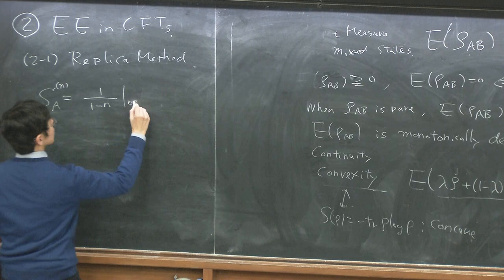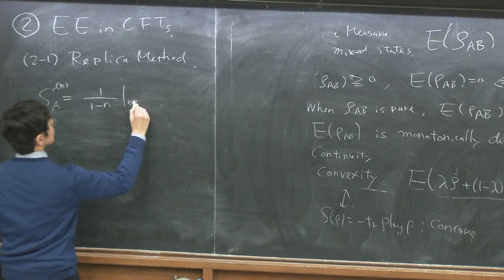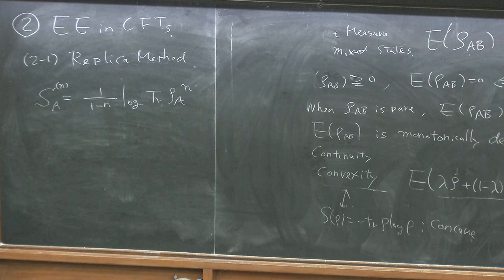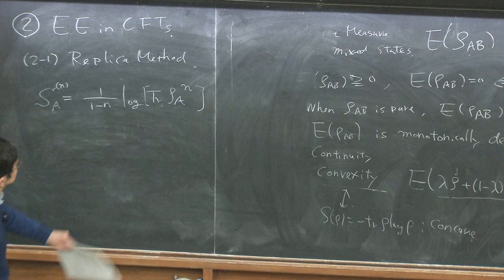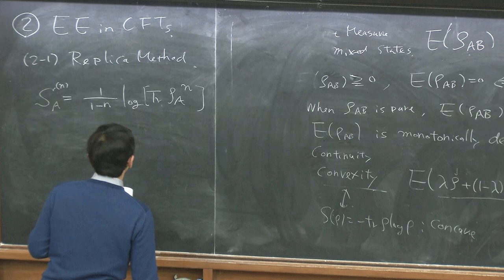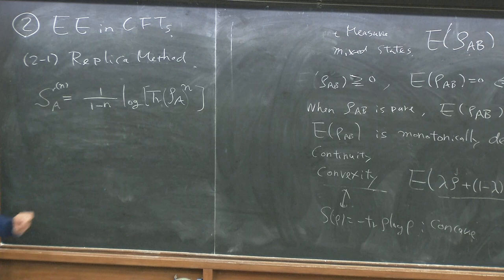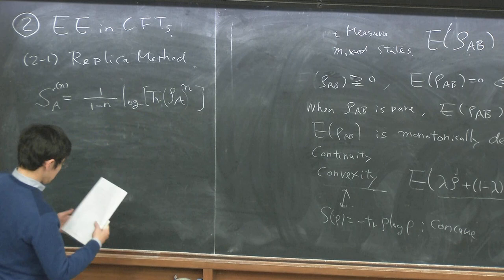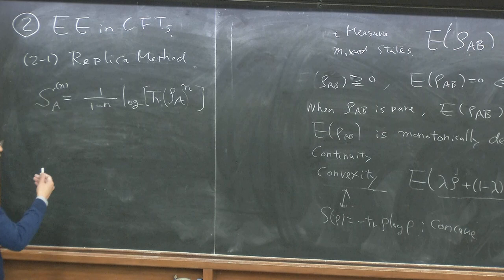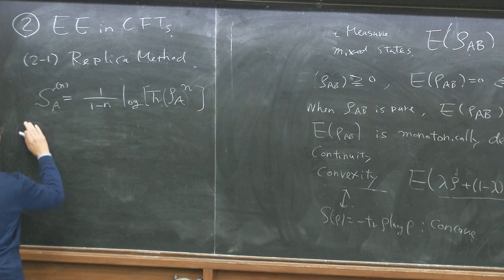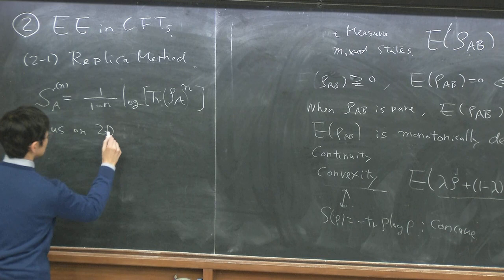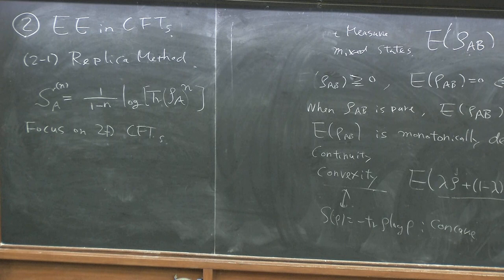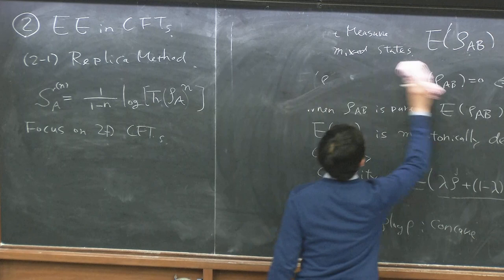Now we need to introduce the familiar method of calculating entanglement entropy. This is a new section on entanglement entropy in CFTs. The first thing to explain is the so-called replica method. This is one way to calculate entanglement entropy in quantum field theory — not the only one, but a very powerful one. In most cases, we use this method. The idea is to go back to the definition. Even though we are interested in the n→1 limit for von Neumann entropy, it's good to look at tr(ρ_A^n) first because there are no logarithms and it may be easier to calculate.